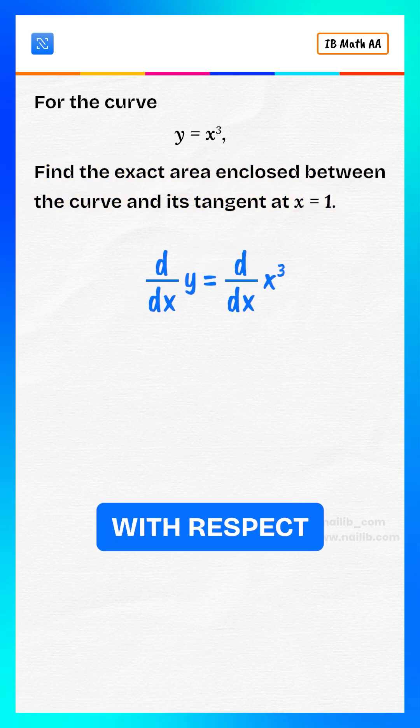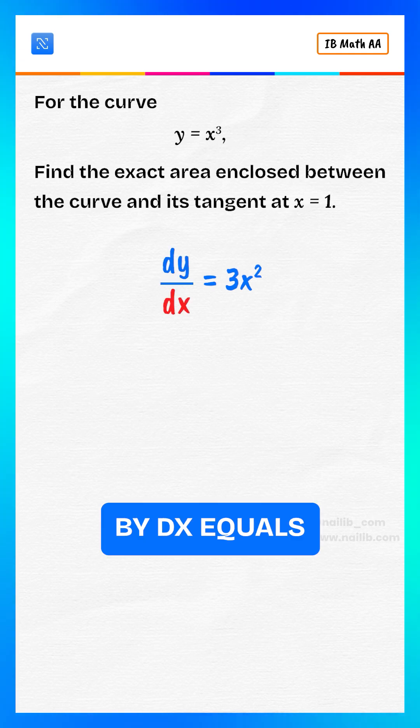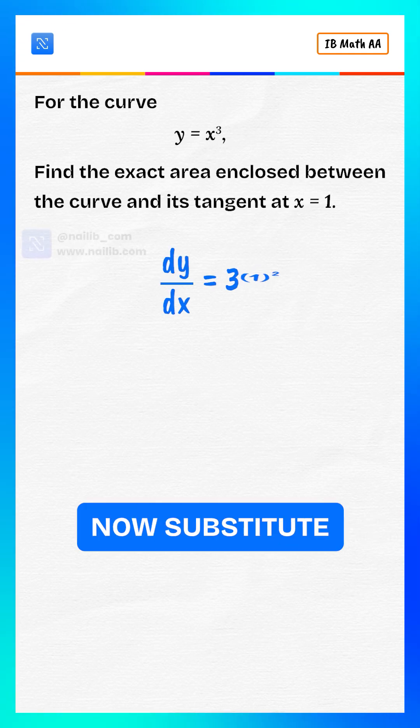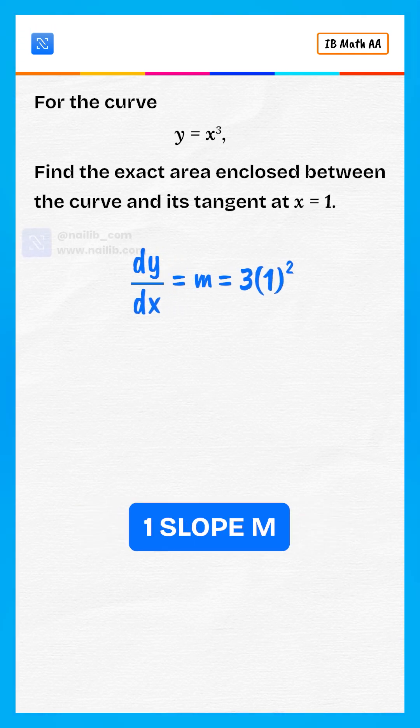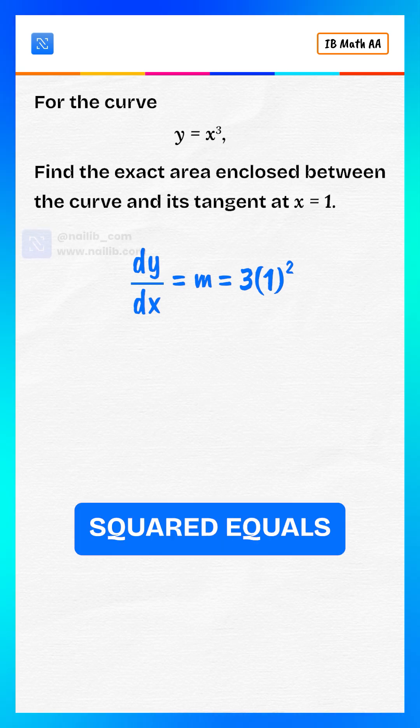Differentiate both sides with respect to x, so dy by dx equals 3x squared. Now substitute x equals 1. Slope m equals 3 multiplied by 1 squared equals 3.